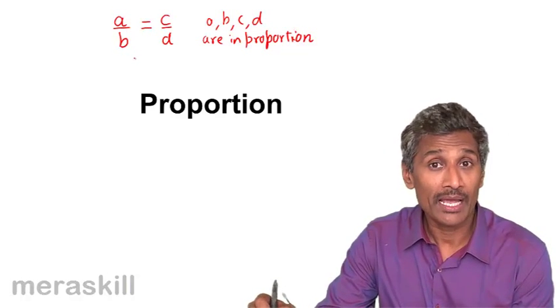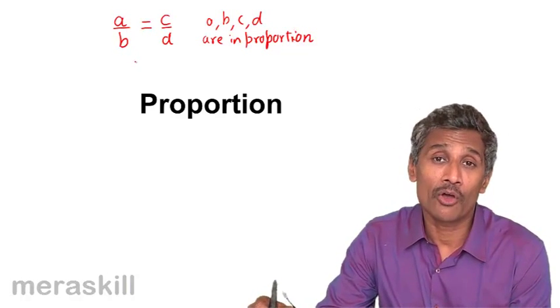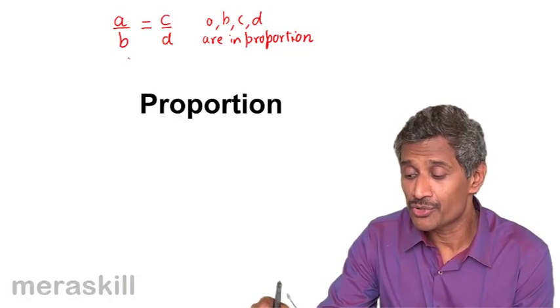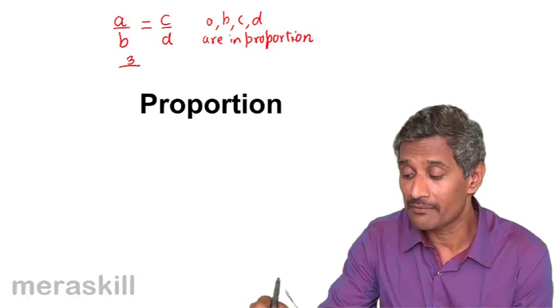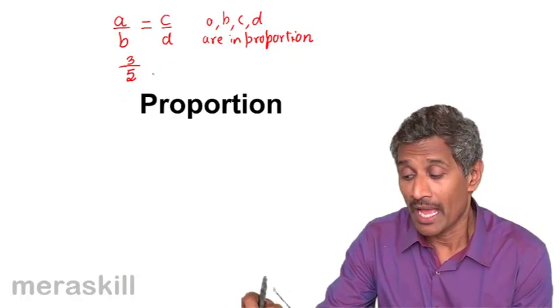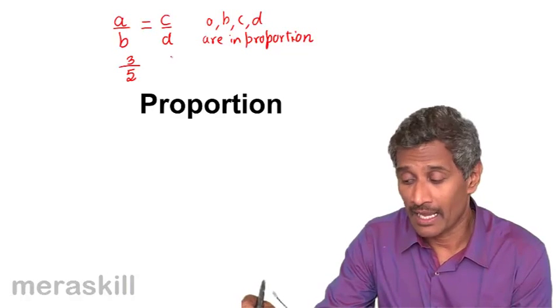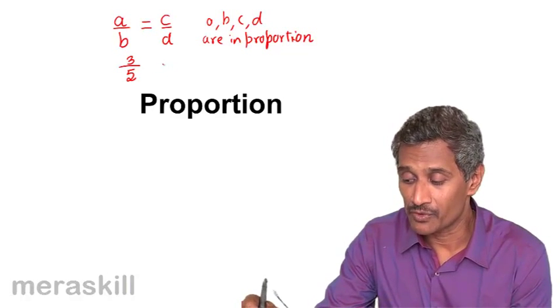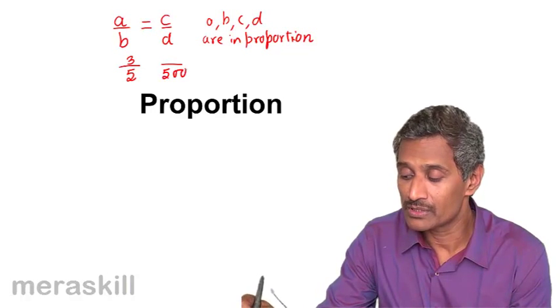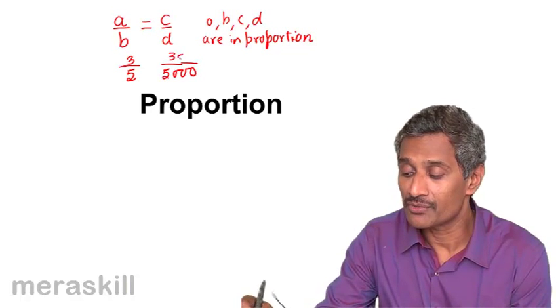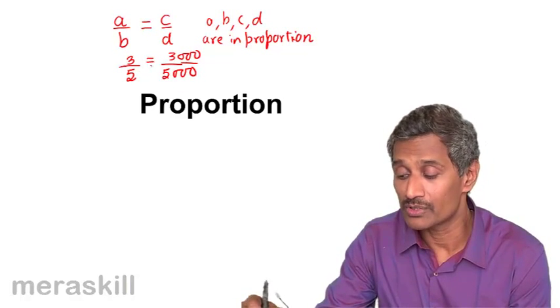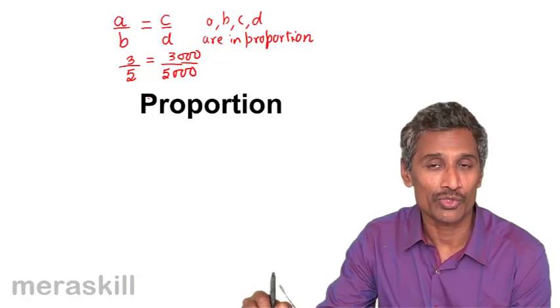We have even cases of comparison of a ratio in the actual quantities. Say, for example, the ratio of your savings to your earnings is 3 is to 5. And your actual earnings and savings, if you see, suppose earnings is 5,000 and your savings are 3,000. Even these two, 3 by 5, 3,000 and 5,000, they are also said to be in proportion.